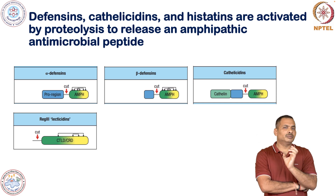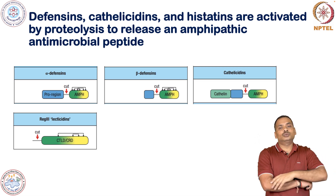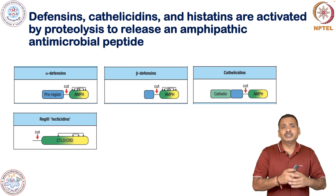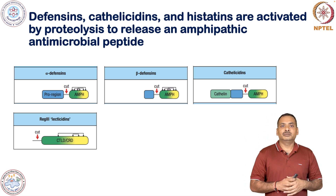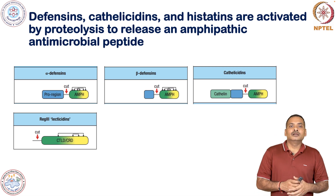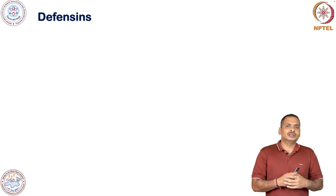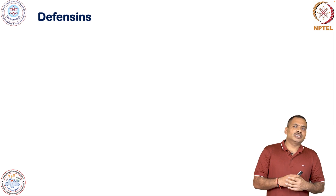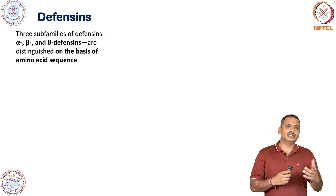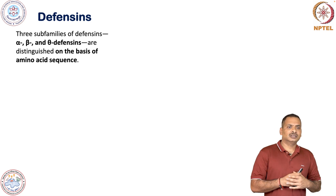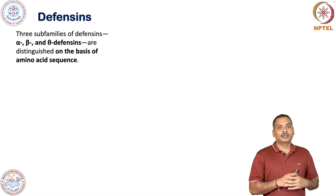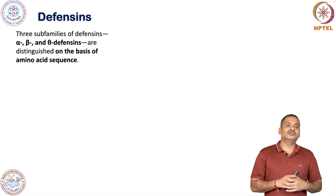Once these amphipathic peptides are generated — for defensins, cathelicidin, and lacticidine — they are attracted towards the microbial membrane system. Once attracted, they deposit in such a way that they create a pore. Defensin has three sub-families: alpha, beta, and theta defensin, which are distinguished based on amino acid sequence.